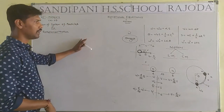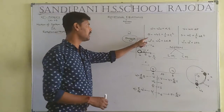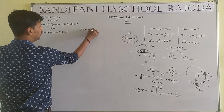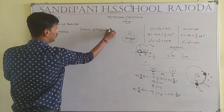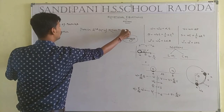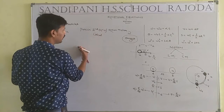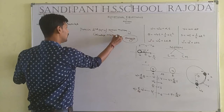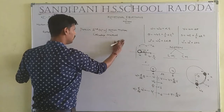Now the basics are complete. Today's question is: Derive the second equation of rotational motion by use of the calculus method. The calculus method, as seen in Chapter 3, means the integration method.